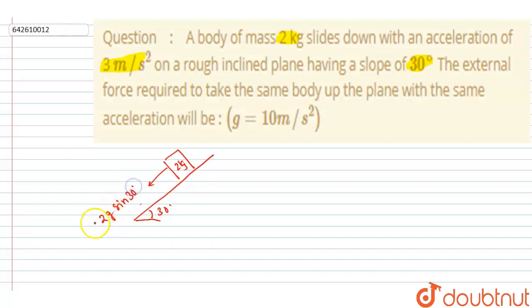You can see it will be 20 into half, that is 10 Newton. And up the incline, the friction force will act. The block is moving in the downward direction with an acceleration of 3 m/s². So from writing the equation along the inclined plane, you can calculate the friction force.